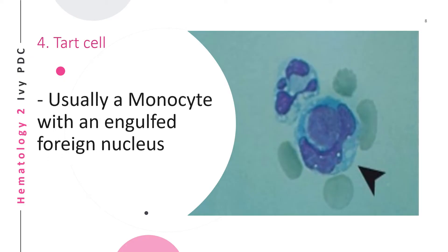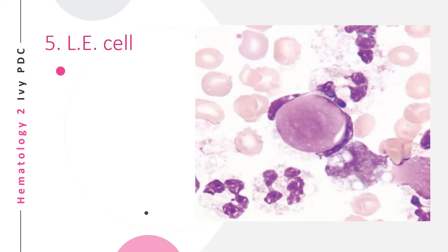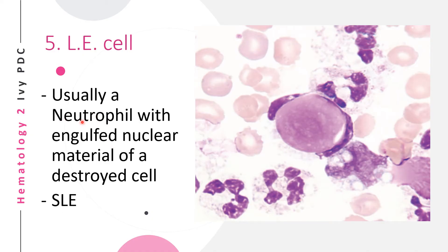Another anomaly is the tart cell, usually a monocyte with an engulfed foreign nucleus — specifically the engulfed nucleus of a neutrophil. It is usually seen in drug sensitivity but has no real diagnostic value. The tart cell should not be mistaken for the LE cell, which is a phagocyte — usually a neutrophil — with engulfed nuclear material of a destroyed cell. This nuclear material, coated by antibodies, is called the LE body. Seeing an LE cell is characteristic of SLE, or systemic lupus erythematosus.